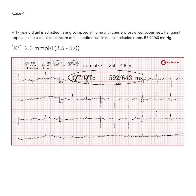On the ECG, this electrolyte abnormality has resulted in widespread T wave inversion. Also, these positive deflections, prominent in the chest leads, are U waves.